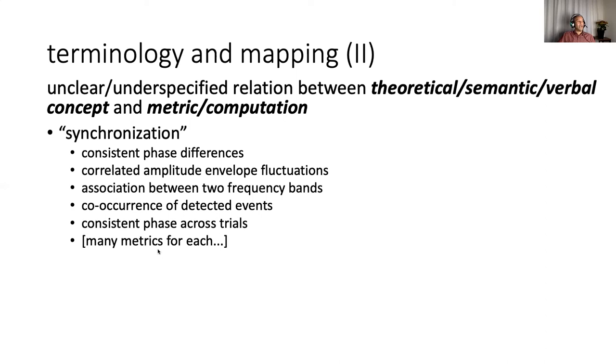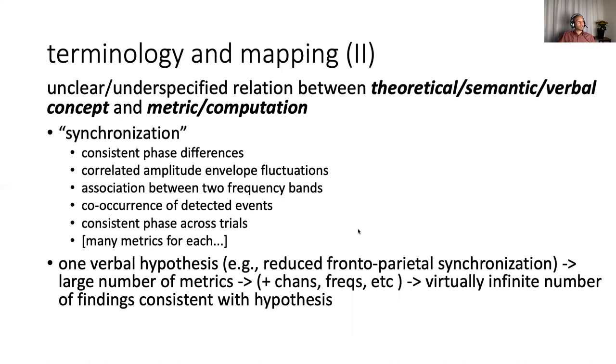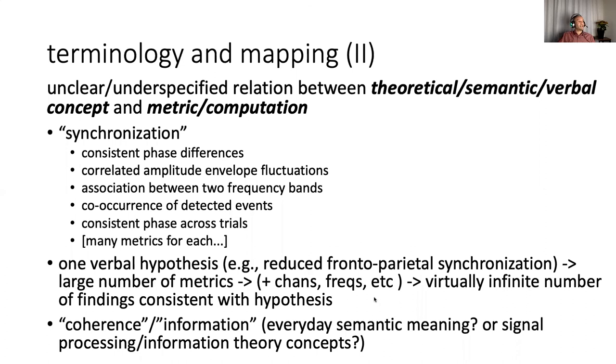So sometimes you might encounter a verbal hypothesis which seems relatively precise, such as we expect reduced frontal parietal synchronization. But this maps onto a very large number of metrics. And then you add your different channels, your different frequencies, and so now you have a virtually infinite number of findings that would be consistent with your hypothesis. And this of course is bad news in terms of the whole false positive issue that we want to avoid. Final thing related here, also terms like coherence or information. It's not often clear whether people are referring to their everyday semantic meaning in a rather loose sense, or are they referring to a highly specific signal processing or information theory concept.